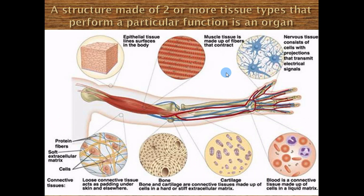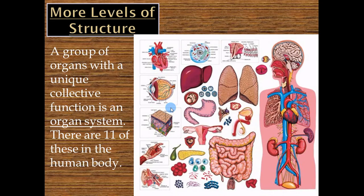An organ is when two or more tissues come together with one specific purpose. For instance, a muscle organ needs a blood supply (connective tissue), has a wrap around it (epithelial tissue), has contractile fibers (muscle tissue), and nervous tissue tells it what to do. So a skeletal muscle organ actually has all four tissue types working together with one common goal — to move a bone.